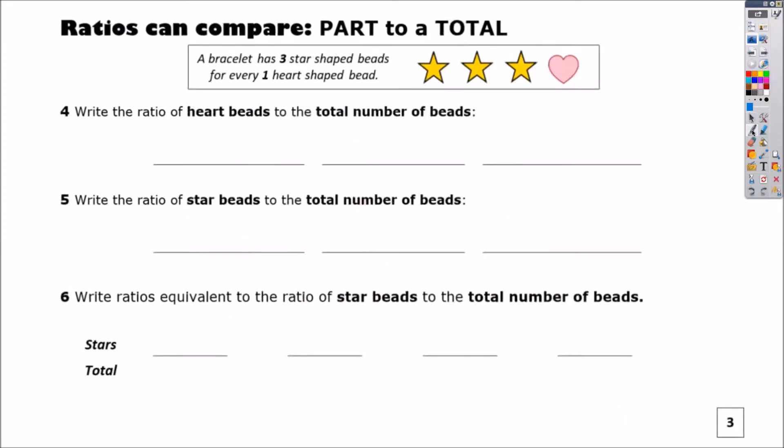All right. Well, let's move on. So now we're going to do another way that we can compare ratios. We did part to part when we were comparing stars and hearts. The second way is part to whole or part to total. So watch this, what number five says. Write the ratio of hearts, one, to the total number of beads. How many total beads were there? Four. So now let's write it in all three ways. One to four, one colon four, and one fourth.